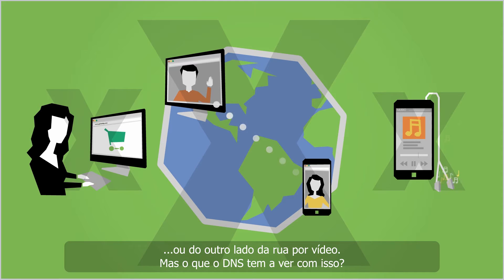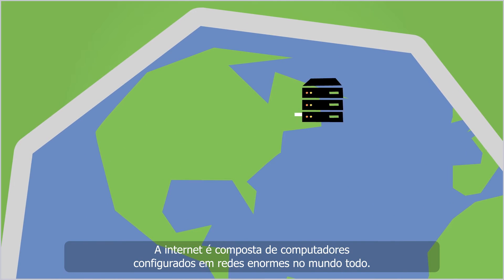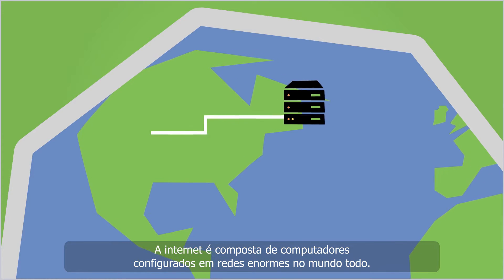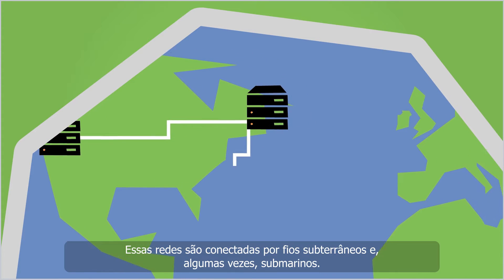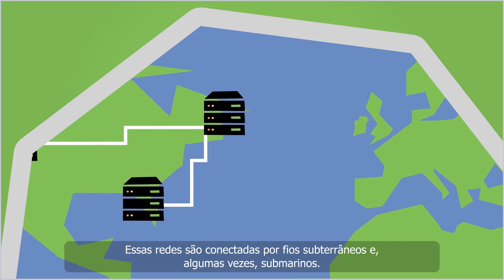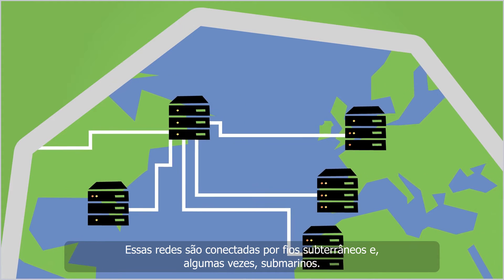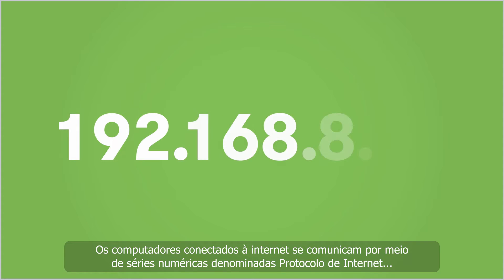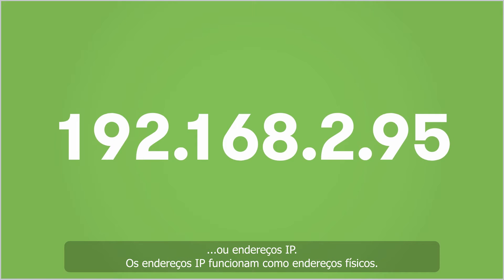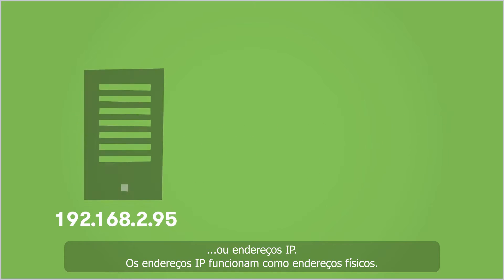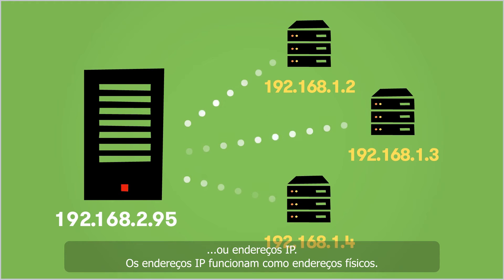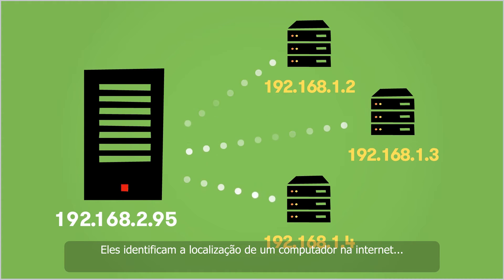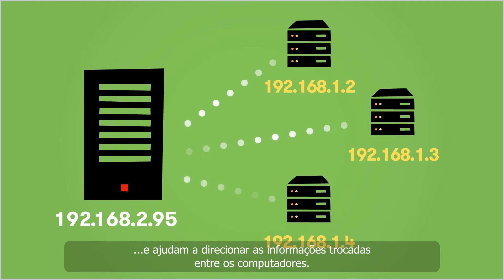But what does DNS have to do with this? The Internet is made up of computers that are set up in large networks around the world. These networks are connected by a web of underground and, in some cases, undersea wires. Computers on the Internet communicate with each other using strings of numbers called Internet Protocol, or IP addresses. IP addresses function like street addresses — they identify where a computer is located on the Internet and help guide the information traveling between computers.